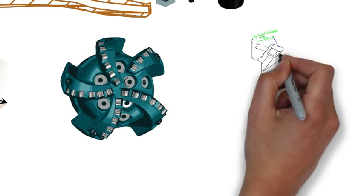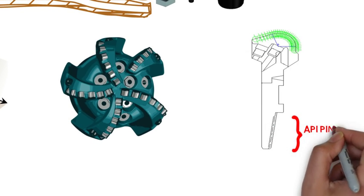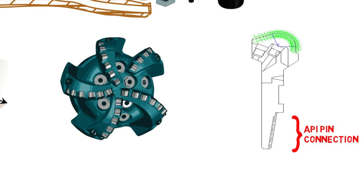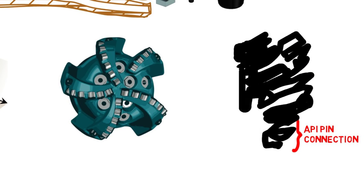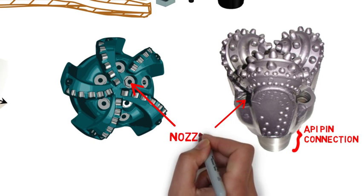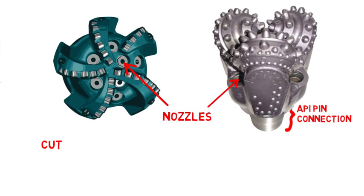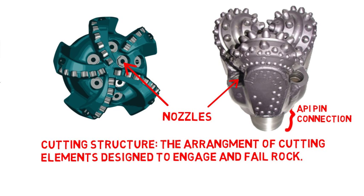All drill bits have a connection, usually a standardized thread, which allows them to securely attach to the drill string. Bits also have to have fluid passageways to direct drilling fluid through, to clean the bit and carry the cuttings back to the surface. Finally, all drill bits have a cutting structure — an arrangement of cutting elements that actually engage and fail the rock.